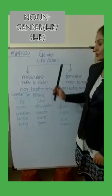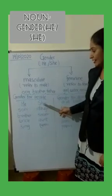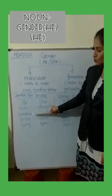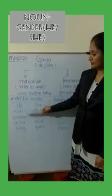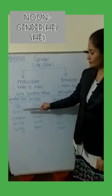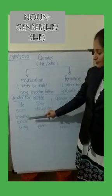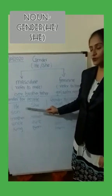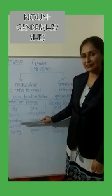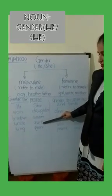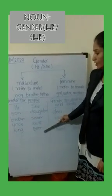So let's learn some more examples for the gender - gender for people, he and she. We have made two columns here and will write the genders accordingly. First is son, and the feminine gender of son is daughter. Next is brother - feminine gender of brother is sister. Next is uncle - feminine gender of uncle is aunt. Next is king - and the feminine gender of king is queen.